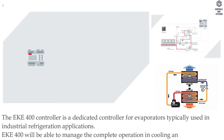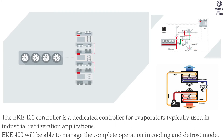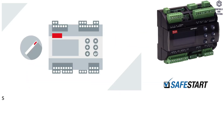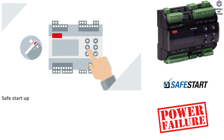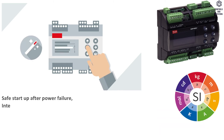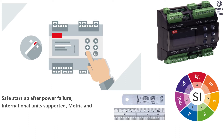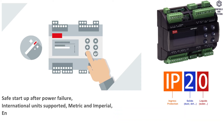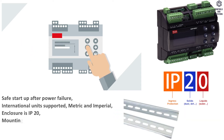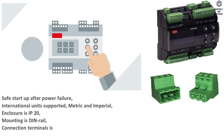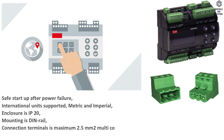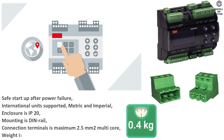The EKE400 will be able to manage the complete operation in cooling and defrost mode, with safe startup after power failure, and international units supported — metric and imperial. The enclosure is IP20, mounting is DIN rail, connection terminals accept maximum 2.5 square millimeters multi-core, and the weight is 0.4 kilograms.